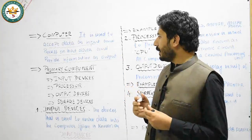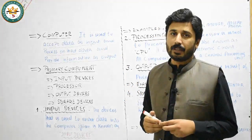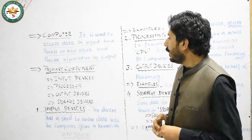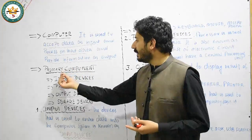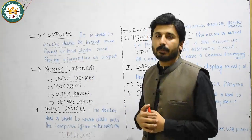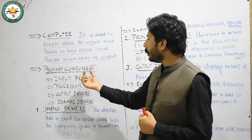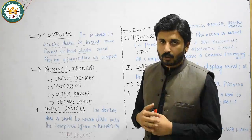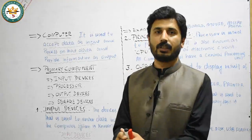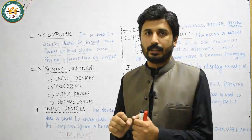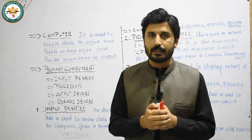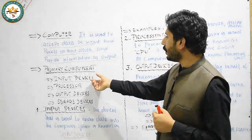Next, our topic is the primary components of a computer. Our basic topic of today's lecture is the standard components of a computer system. Primary means standard, and component means parts. What are the components that are arranged to create a computer system? The first one is input devices.